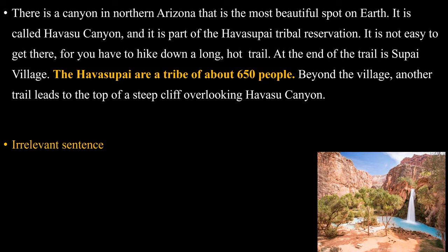There is a canyon in northern Arizona that is the most beautiful spot on earth. It is called Havasu Canyon and it is part of the Havasupai tribal reservation. It is not easy to get there, for you have to hike down a long trail. At the end of the trail is Supai village. The Havasupai are a tribe of about 650 people. Beyond the village, another trail leads to the top of a steep cliff overlooking Havasu Canyon.